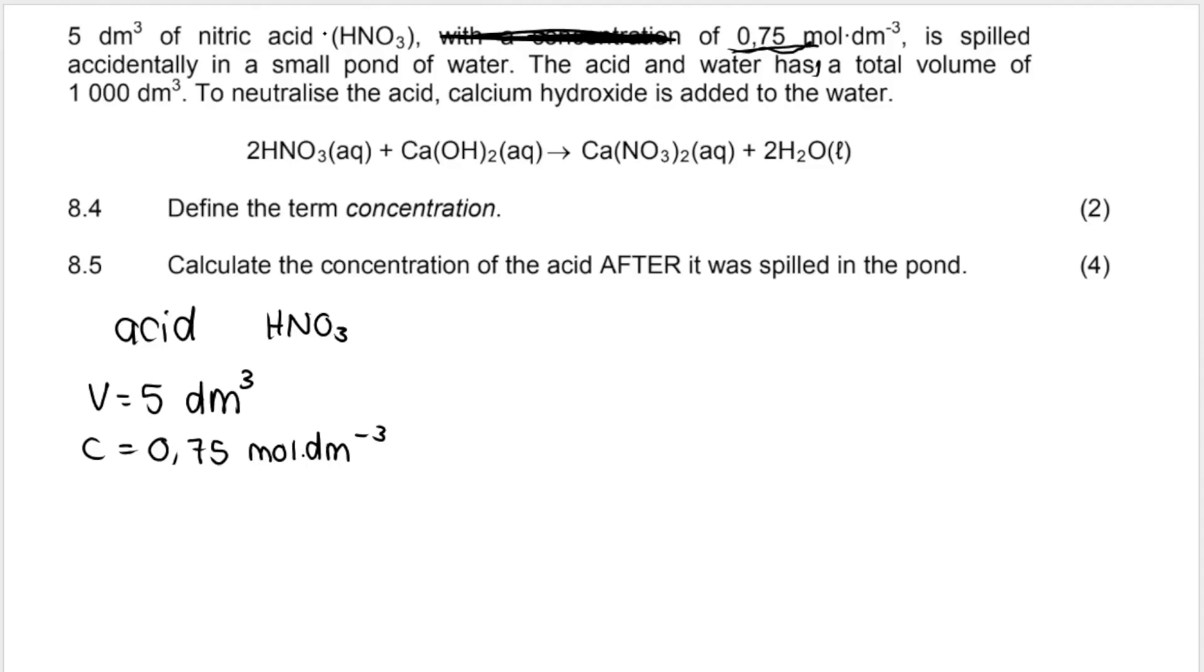They say it's spilt accidentally in a small pond of water. Then after they spill it, the acid and water has a total volume of 1,000 cubic decimeters. So we've got acid before it's spilt with the following volume and the following concentration. And then we've got the after the spill, once it's spilt into the pond, after the spill, the total volume is 1,000 cubic decimeters. Let's see what they say. Calculate the concentration of the acid after it was spilled in the pond.